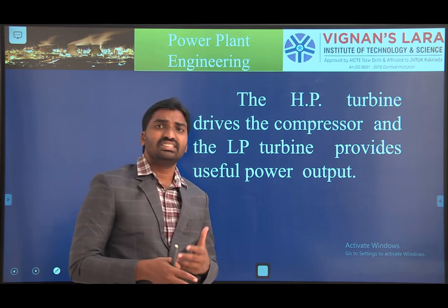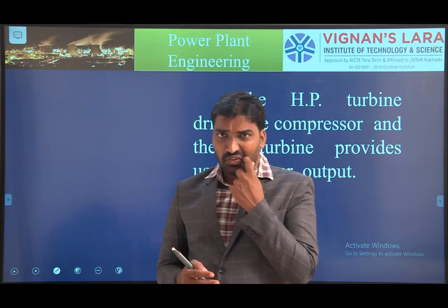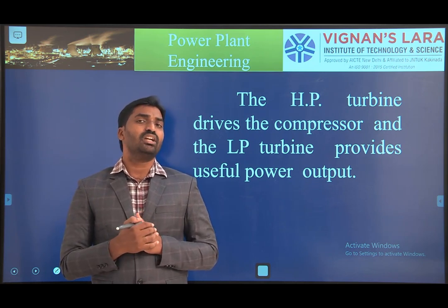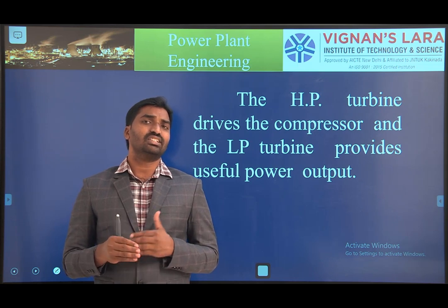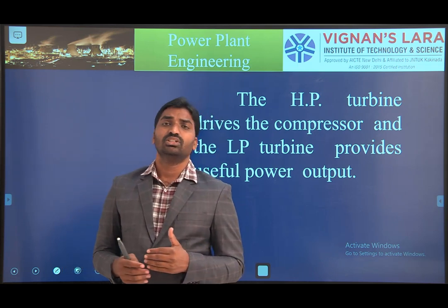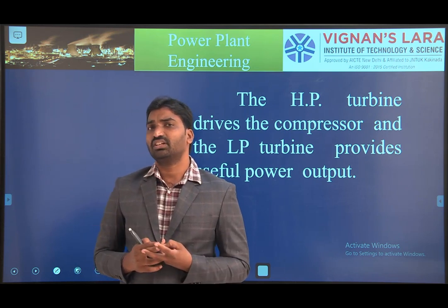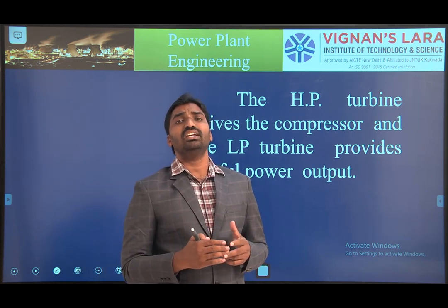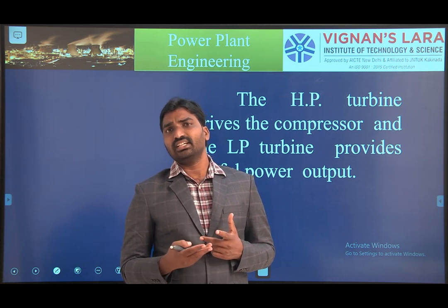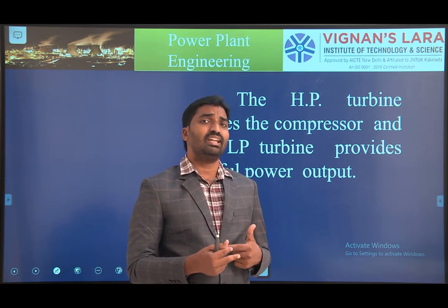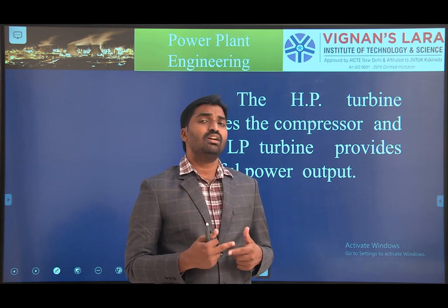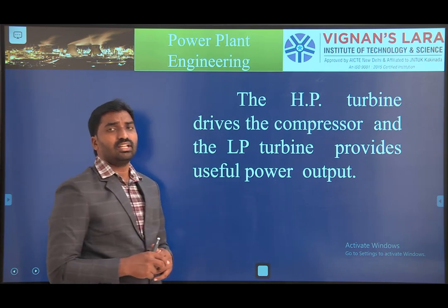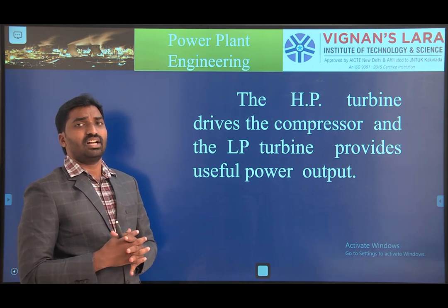With two turbines, in a gas turbine power plant, most of the power is utilized by the compressor. The high pressure turbine is used for running the compressor, while the low pressure turbine gives additional mechanical energy that can be used for producing electrical energy. These are the regenerative, intercooling, and reheating concepts — all used to improve open cycle gas turbine efficiency.